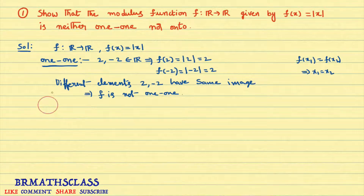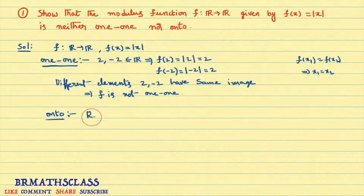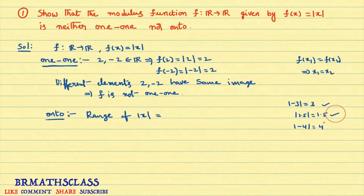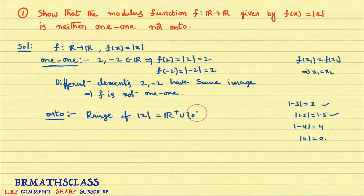Now we will check whether this function is onto or not. What is the range of the modulus function? Modulus of -3 is 3, modulus of 1.5 is 1.5, modulus of -4 is +4. The modulus function always gives a positive real number. And modulus of 0 is 0. So the range of the modulus function is all positive real numbers including 0.